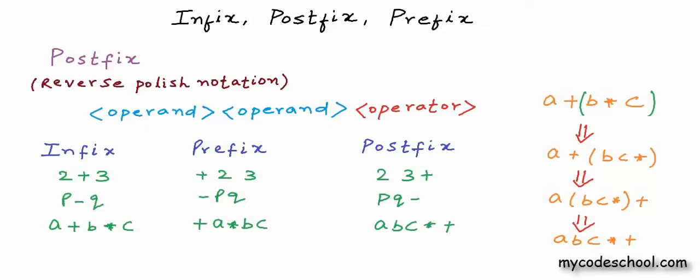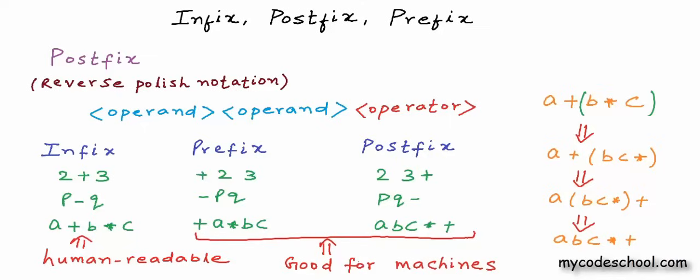Parentheses surely add readability to any of these forms, but if we are not concerned about human readability, for a machine we actually save some memory that would be used to store parenthesis information. Infix expression is definitely most human readable, but prefix and postfix are good for machines. This is infix, prefix, and postfix notation. In the next lesson we will discuss evaluation of prefix and postfix notations. That's it for this lesson — thanks for watching.